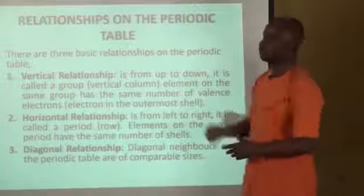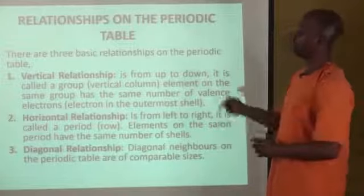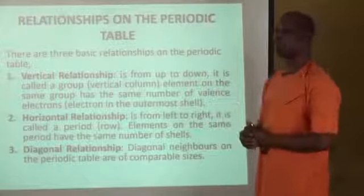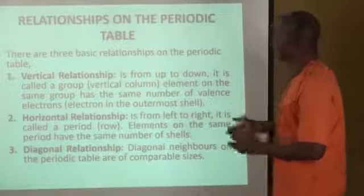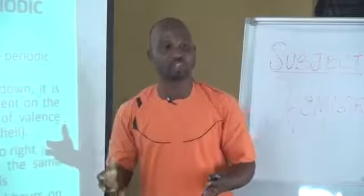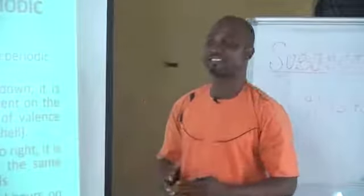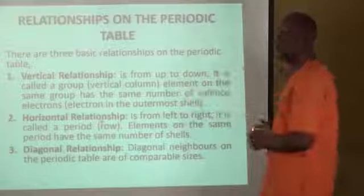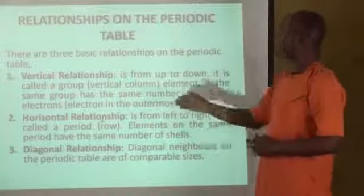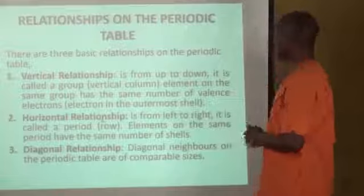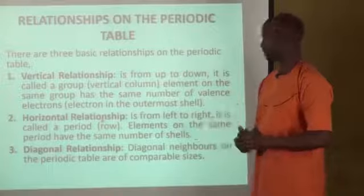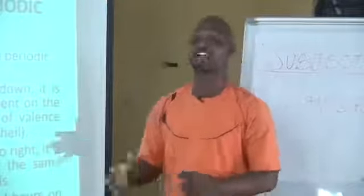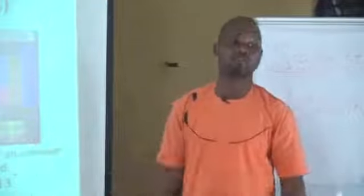There are relationships on the periodic table, broadly classified into three. We have the vertical relationship, which is from up to down, called a group or vertical column. Elements on the same group have the same number of electrons in the outermost shell — in other words, valence electrons. The other one is the horizontal relationship, from left to right, called a period or row. Elements on the same period have the same number of shells. The last one is diagonal relationship, which has to do with diagonal neighbors of comparable sizes.